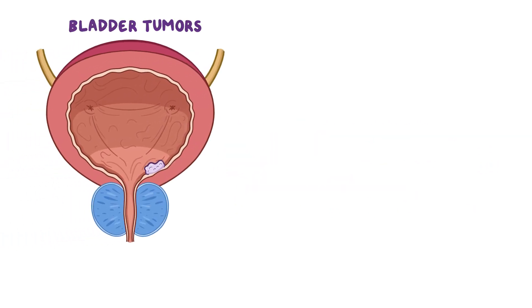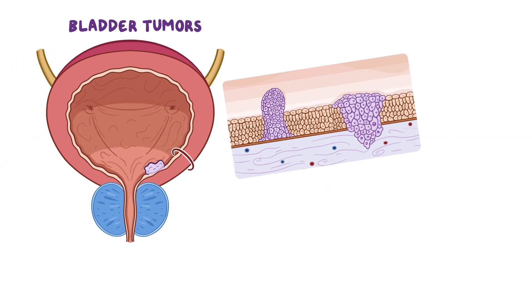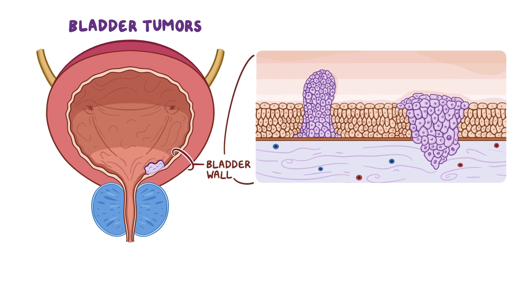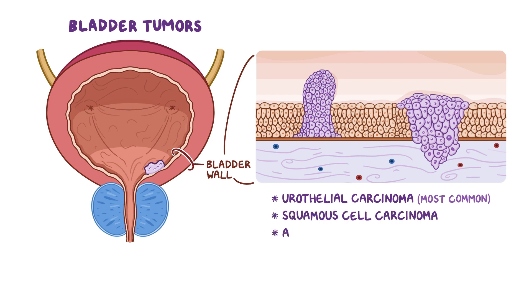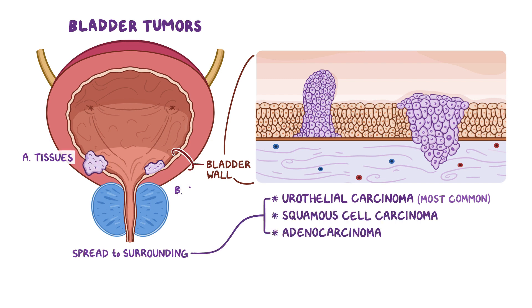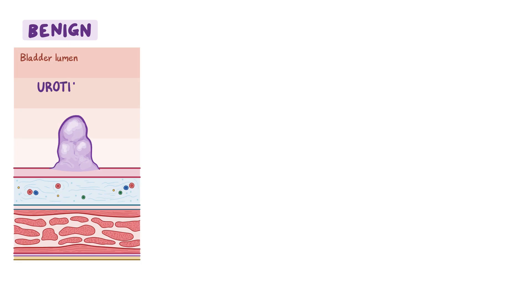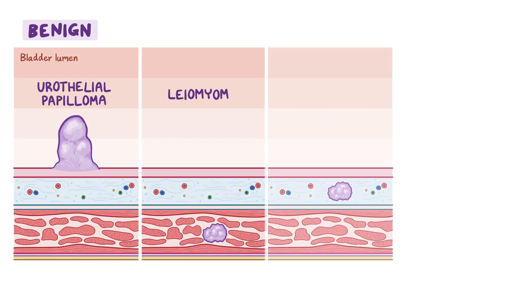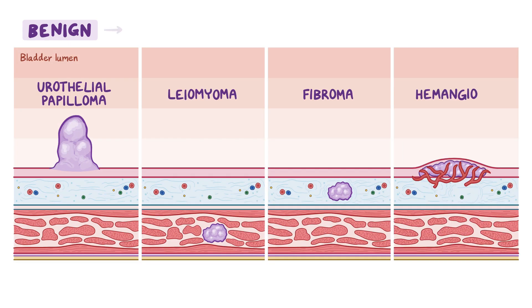Bladder tumors are growths arising from various tissue layers of the bladder wall. Malignant bladder tumors include urothelial carcinoma, which is the most common type, as well as squamous cell carcinoma and adenocarcinoma, among others, and these can spread to surrounding tissues and organs. In contrast, benign bladder tumors — including urothelial papilloma, leiomyoma, fibroma, and hemangioma — are less common and stay localized to the bladder.